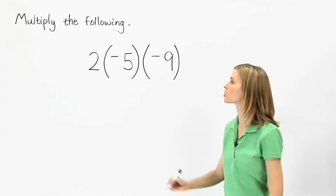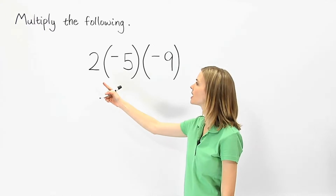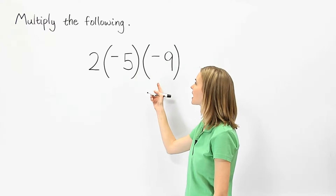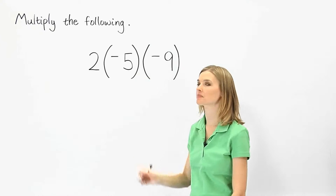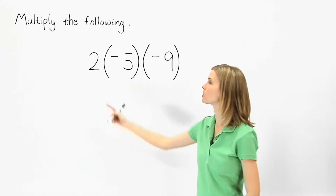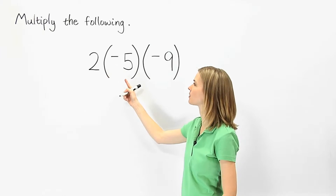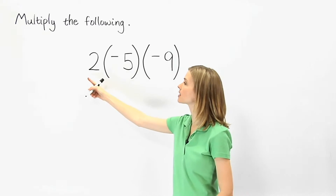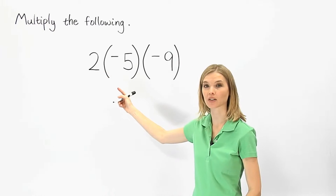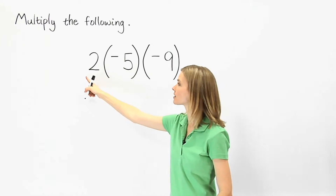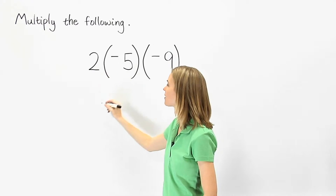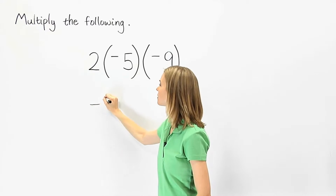We're asked to multiply 2 times negative 5 times negative 9. We begin by multiplying 2 times negative 5. Since a positive times a negative is a negative, positive 2 times negative 5 is negative 10.